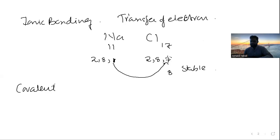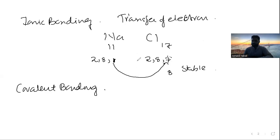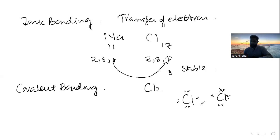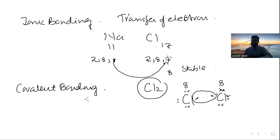Now, covalent bonding. Let's come to the chlorine covalent bond, like Cl2 gas. Chlorine has seven electrons here, and chlorine has seven electrons here. This chlorine shares one with that, and that chlorine shares one with this. So now each has eight electrons. Both of them share, and that makes it Cl2. So that is sharing of electrons — that is covalent bonding.